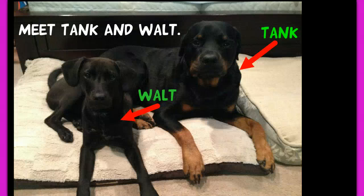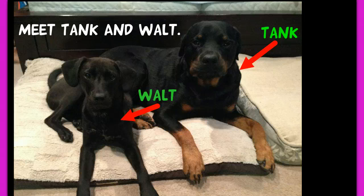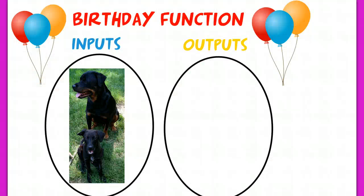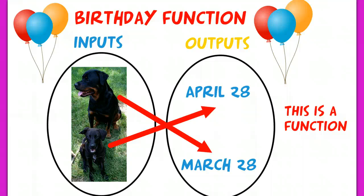So I figured you guys should meet Tank and Walt, since they are always making tons of noise in the background. They're going to help us explain the term function in terms of the birthday function. Think of Tank and Walt as your inputs — that would be your domain. Tank and Walt are two separate inputs, and their outputs, since it's the birthday function, would be their actual birth date.